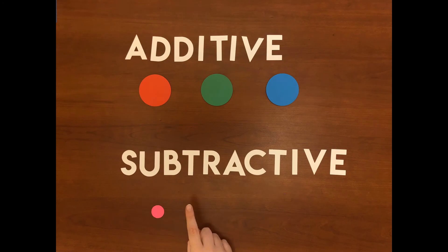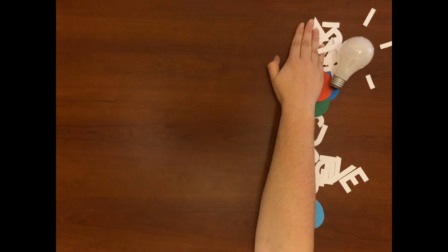Additive deals with light or subtractive deals with paint and ink. Here are the colors you probably thought were primary. Red, yellow, and blue. When in fact red and blue are both secondary colors.